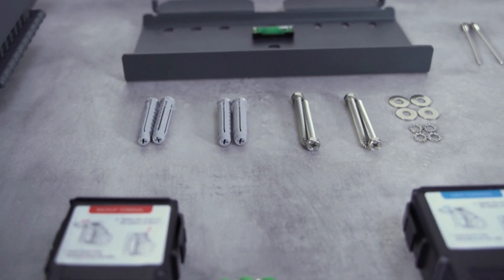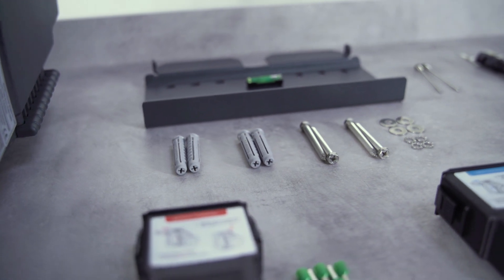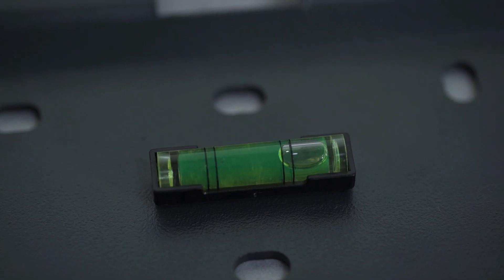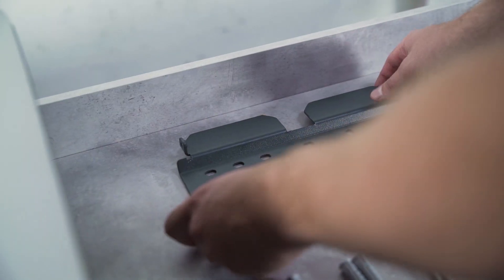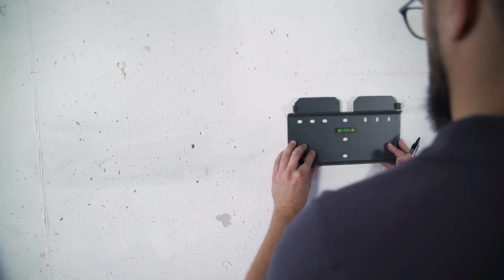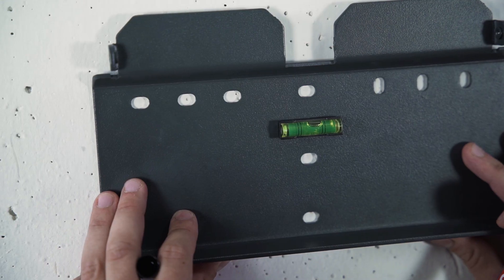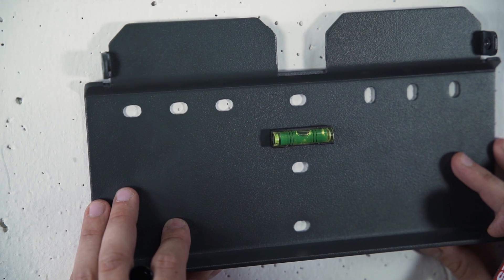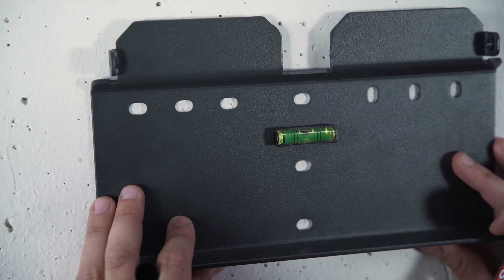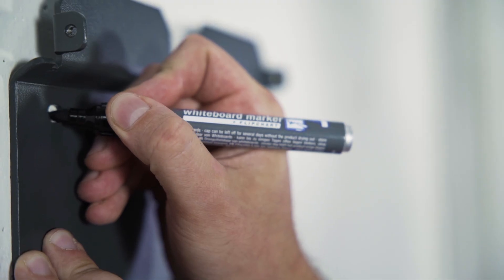All screws and plugs required for the installation are already included in the delivery. You only need your own tools and off we go. You need a pen to mark the drill holes. The spirit level on the other hand is not necessary as it is already integrated in the mounting plate.